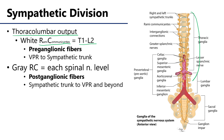Above the level of T1 there is no connection between the central nervous system and the sympathetic trunk. Below the level of L2 there is no connection between the sympathetic nervous system and the spinal cord. All of that communication is between T1 through L2.